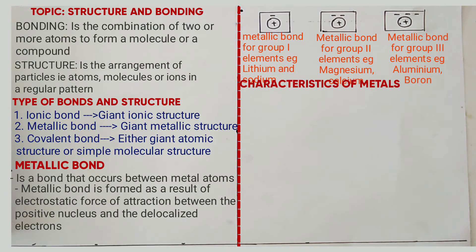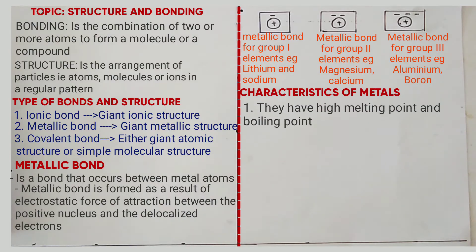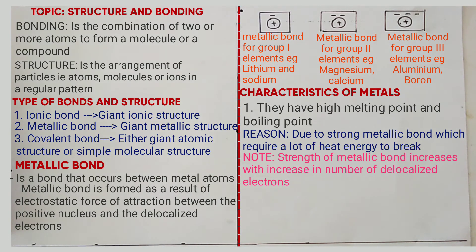Characteristics of substances which have metallic bonds. Number one: they have high melting and boiling points. Reason: due to strong metallic bonds which require a lot of heat energy to break. The strength of the metallic bonds depends on the number of the delocalized electrons — that is to say, the strength increases with increase in number of delocalized electrons. For example, aluminium has higher melting and boiling points than copper because it has more delocalized electrons and its atoms are held by stronger metallic bonds.